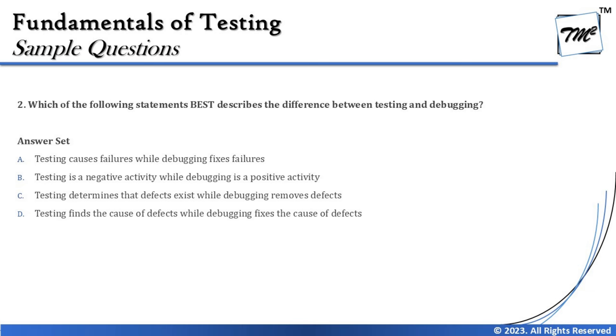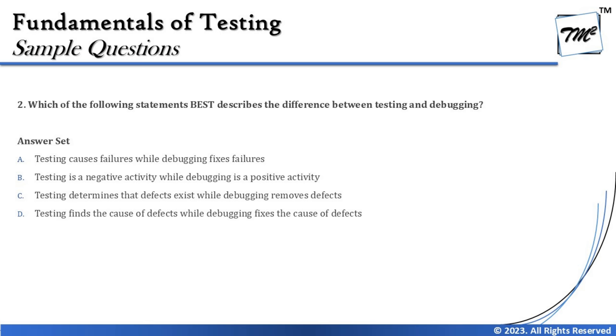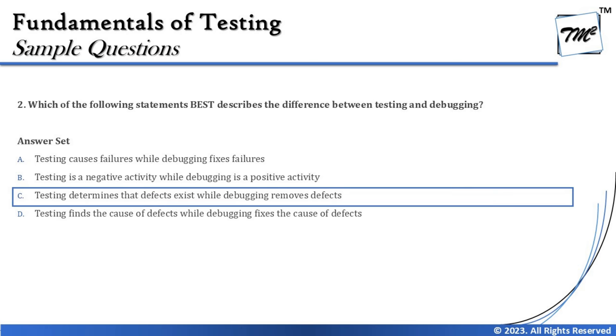Option D says: testing finds the cause of defects while debugging fixes the cause of defects. Testing does not find the cause — that is what debugging does. Debugging has three major activities: analyzing the failure, getting to the root cause, and fixing the defect. So the right answer for this question is C — testing determines that defects exist while debugging removes the defects. That aligns with the correct definitions of testing versus debugging.